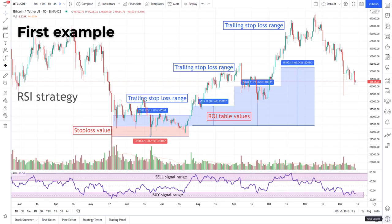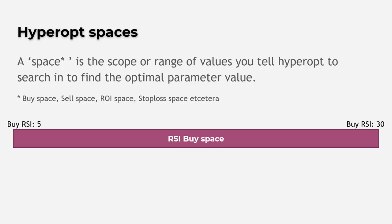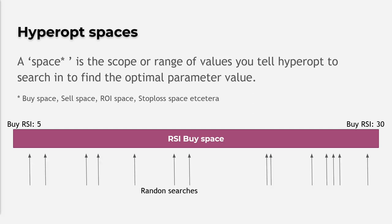In this example, I am searching for the optimal RSI buy value. The best buy opportunities lie in the lower RSI value range, so I am configuring the search space between RSI 5 and RSI 30. This tells hyperopt to search for the optimal RSI buy value between 5 and 30. The first thing hyperopt does to find the optimal value is randomly create 30 combinations of the indicator value within the given space. You can log the initial state of these random values with the random state command line parameter to create reproducible results.